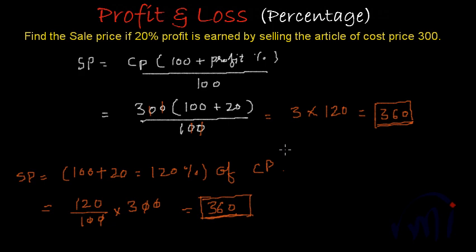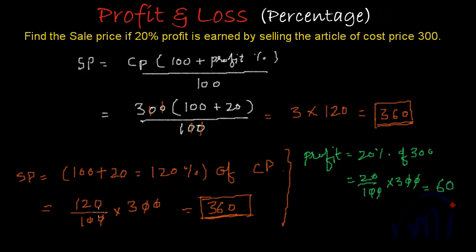Profit is 20 percent of 300. So I am solving it over here using green color. So profit is actually 20 percent of 300. So 20 percent of 300 will be 20 by 100 of 300. These two zeros will cancel these two zeros and 3 times 2 is 6. So profit is 60 and sale price, if you are earning profit, is actually equal to cost price plus profit. So from here cost price was 300 and profit we have earned is 60. So from here also we get the sale price as 360.